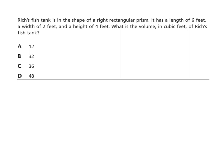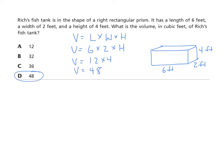Okay, this one's pretty straightforward. Let's read it. Rich's fish tank is in the shape of a right rectangular prism. It has a length of 6 feet, a width of 2 feet, a height of 4 feet. What is the volume in cubic feet of Rich's fish tank? Well, we should know that volume equals length times width times height. I could also potentially make a model here. And just to illustrate things fully. So, I have a length of 6 feet, a width of 2 feet, and a height of 4 feet. Let's insert the values. Volume equals. Our length is 6. Our width is 2. Our height is 4. We'll simplify the expression. 6 times 2 is 12. Times 4. 12 times 4 is 48. There's our answer. Pretty straightforward.